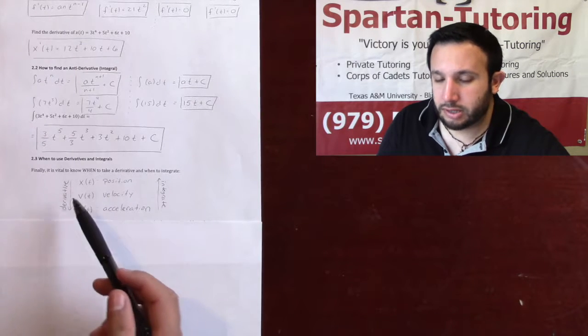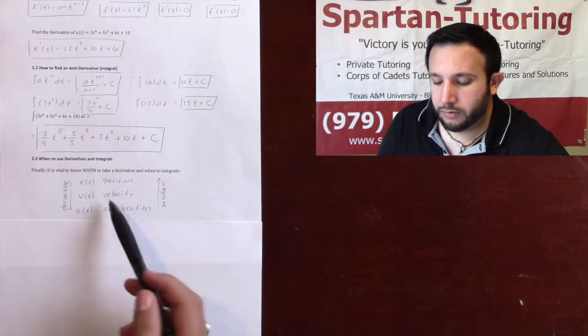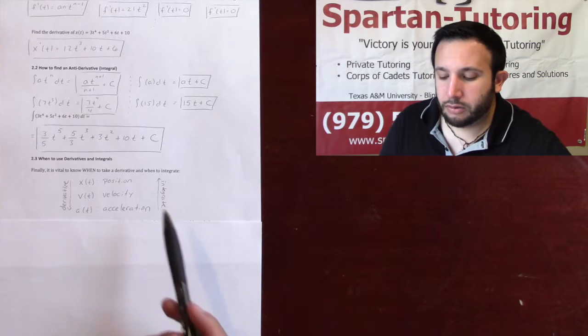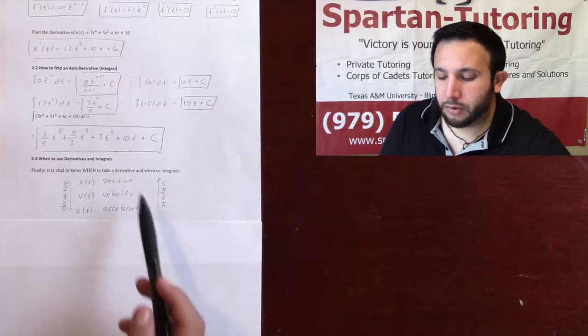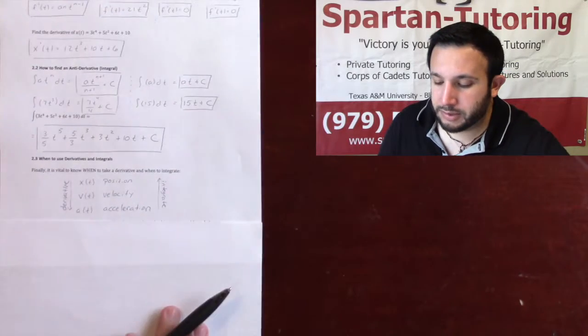Velocity is the rate of change, is the derivative of position. And acceleration is the rate of change, or derivative of velocity. But if you're given acceleration and you want to find velocity, or if you're given acceleration and you want to find position, you're going to have to integrate up in order to get to that position.